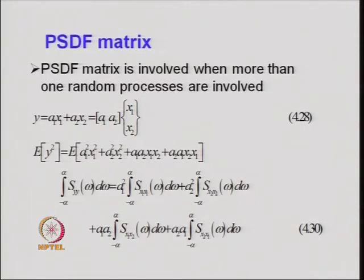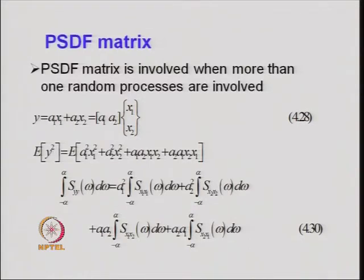Today, let us look into the case when we have more than one random process. In a particular structure, you may have more than one excitation, and each excitation could be a random process. The output similarly could be more than one. Therefore, the essential relationships that exist between a set of input random processes and a set of output random processes need to be understood clearly.